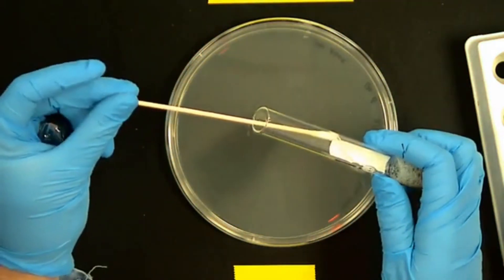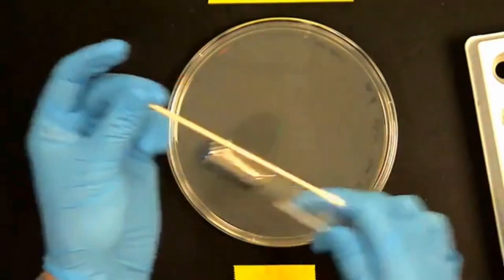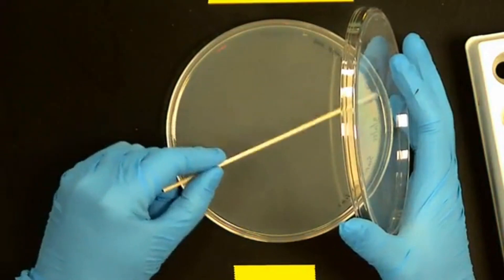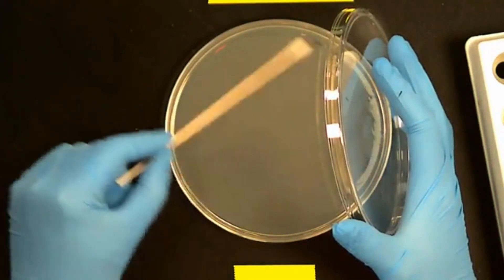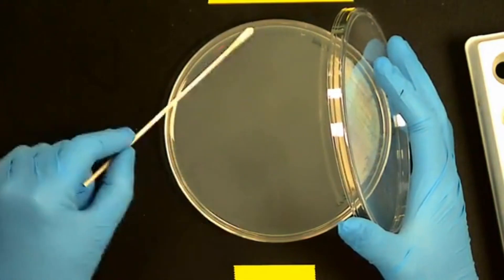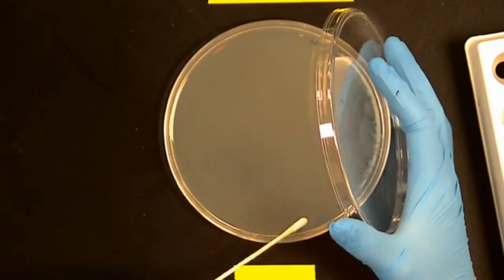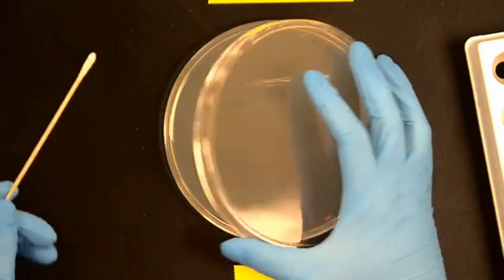Remember to touch the swab against the glass tube before removing so it doesn't drip. Then you're going to swab the entire surface from one side to the other using very tight strokes. As you're doing this, rotate the swab 360 degrees to ensure you're getting contact of all surfaces of the swab.